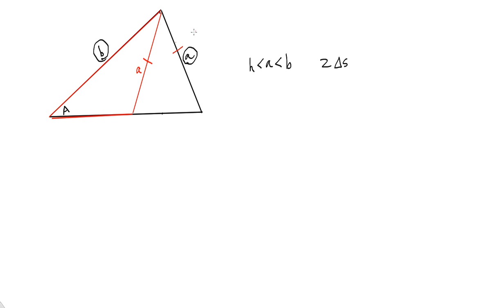You can actually create a second triangle — shown here in red — with the same exact sides A, B, and angle A. I haven't changed any of those three dimensions, but I've gotten two different triangles.